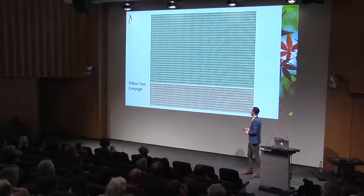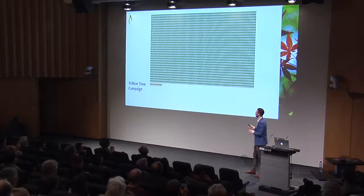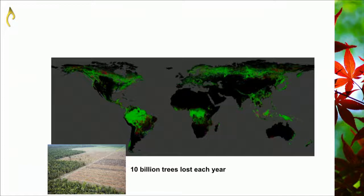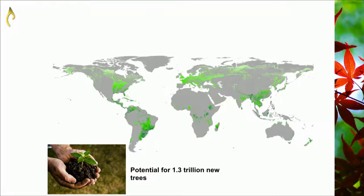Obviously this sounds like a ludicrous goal, but since that study was published they've already planted 14 billion new trees — having these new targets and strategies has allowed them to really ramp up their efforts, and they're moving incredibly well towards their goals. This spatially explicit map of tree populations also helps us understand how many trees are lost each year and the potential for new forest gain if we were to restore around the world — there's possible space for another 1.3 trillion trees.